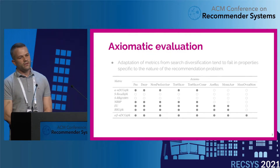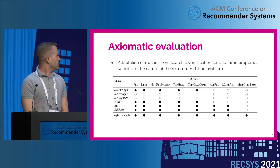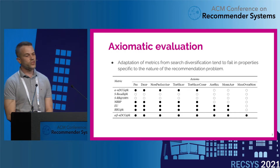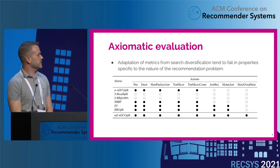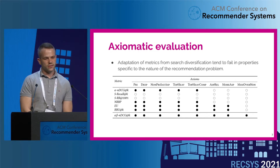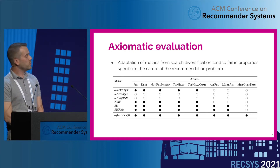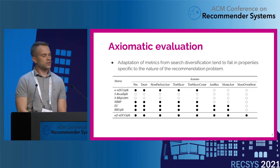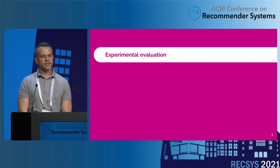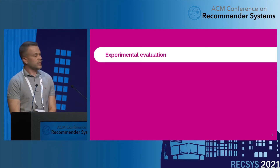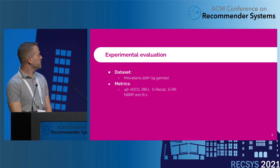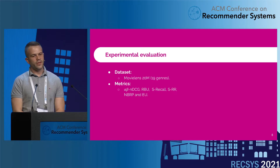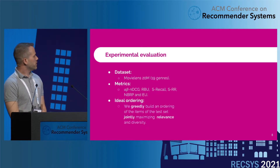We evaluate our new proposal and the possible adaptation of system metrics for search result diversification — whether they hold the different axioms. Metrics from retrieval tend to fail on specific aspects from the recommender systems area, while our new metric satisfies all those axioms. We decided to produce an experiment with actual collaborative filtering data, using the MovieLens 20 million dataset, which has 19 categories. We evaluate alpha-NDCG, RBU, SRECOL, SRR, NBRP, and EU. We define an ideal ordering that ranks items on the test set by jointly optimizing relevance and diversity, then produce different perturbations.